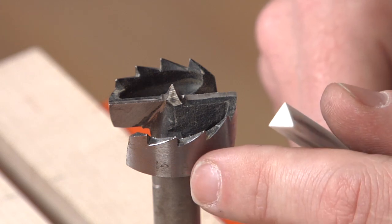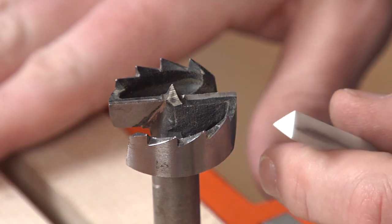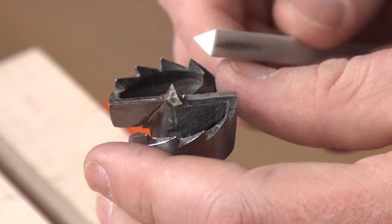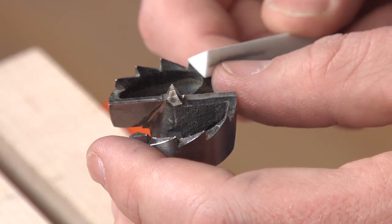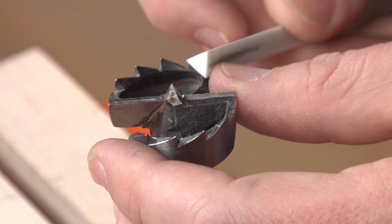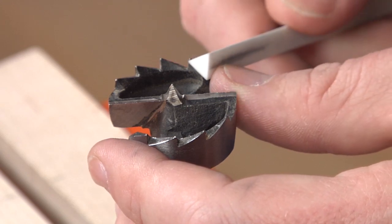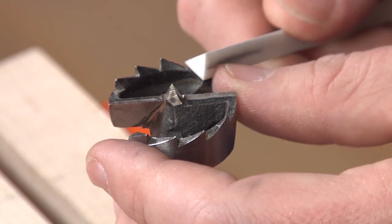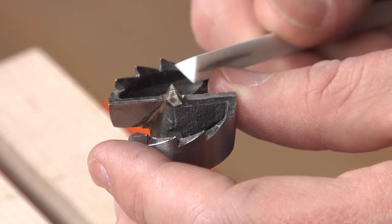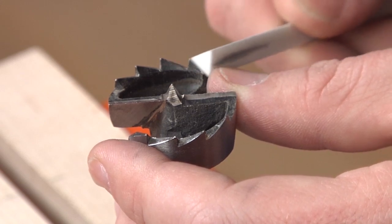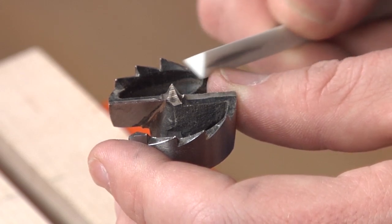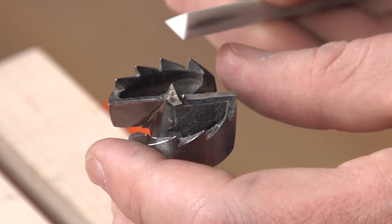Now I've got the bit locked into my vise, and I'm just going to lay that slip stone against the back of that, match the angle of the tooth flat, and then I kind of like to lock it in with my thumb there, and just do a few strokes on the back of each tooth.